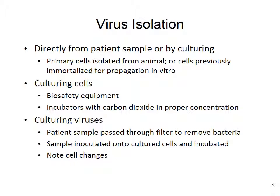Virus isolation can be done directly from a patient sample. Primary cells are isolated from the animal, or previously immortalized cells are used for in vitro propagation. This requires biosafety equipment and incubators with carbon dioxide at the proper concentration — not done in clinic. The patient sample is filtered to remove bacteria, inoculated onto cultured cells, incubated, and then the changes in the cells are observed.